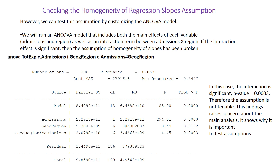The command line in STATA would look as follows: you place ANOVA, then the dependent variable, the two independent variables, plus the interaction between admissions and geographic region. In this case, we notice that the interaction is significant, since the p-value is less than alpha — it is 0.0003. Therefore, the assumption is not tenable. These findings raise concern about the main analysis and show why it is important to test assumptions.